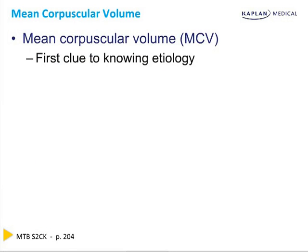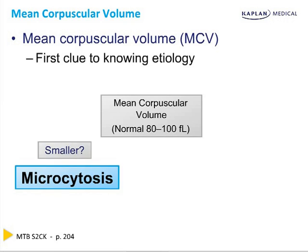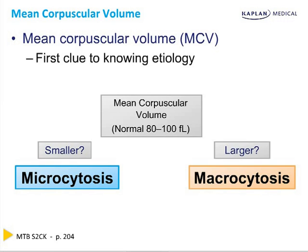The first clue to knowing the etiology is the cell size — that MCV, the mean corpuscular average cell size. If the MCV is low, it's a microcytosis; if the MCV is high, it's a macrocytosis. Macro just means large cells above an MCV of 100. It doesn't mean megaloblastic.